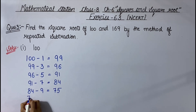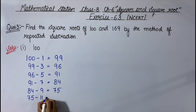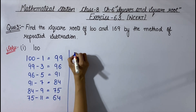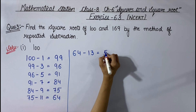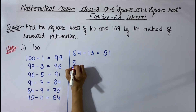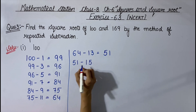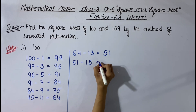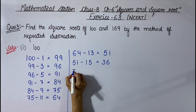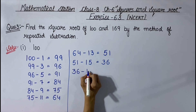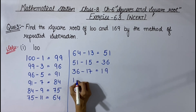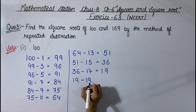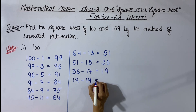After that, from 75 we subtract the next odd number 11, and it gives 64. Now from 64 we subtract the next odd number 13. It will be 51. After that, from 51 we subtract the next odd number 15. 51 minus 15 equals 36. Then from 36 we subtract the next odd number 17. 36 minus 17 equals 19. And then from 19 we subtract the next odd number 19. 19 minus 19 equals 0.